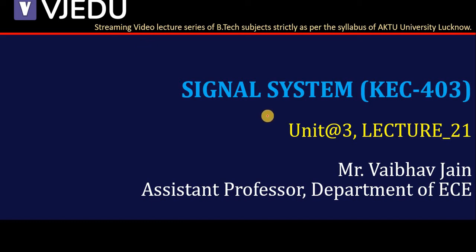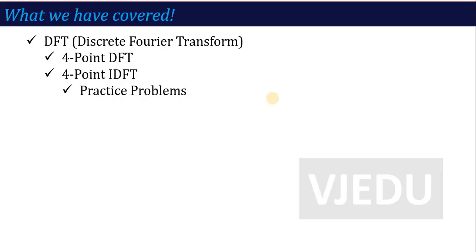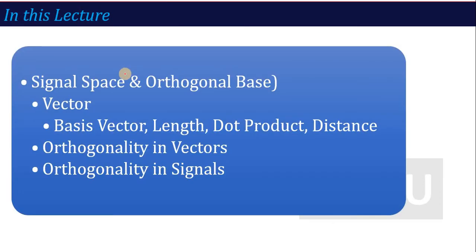Hello everyone, I welcome you all to the video lecture series of Signals and Systems. The subject code is KEC403 and here we are in lecture number 21 of unit number 3. In the last lecture, we were talking about discrete Fourier transform where we saw how to calculate DFT or IDFT. Now in this lecture, we are going to talk about signal space and orthogonal basis.